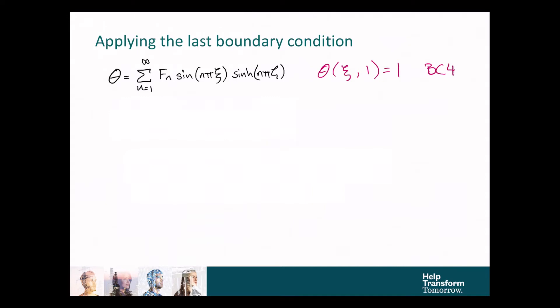We have to apply the last boundary condition, and that is that theta equals 1 for any value of xi, and for the particular value of zeta equals 1. So, we'll plug that into our equation. And we still have an infinite number of values of Fn to solve for, and we've only got this one boundary condition that we've applied.